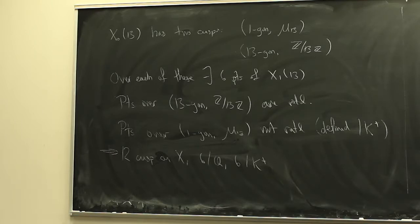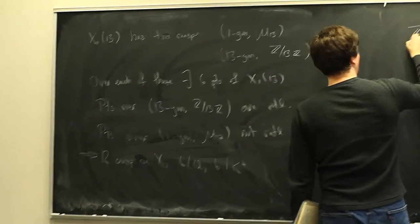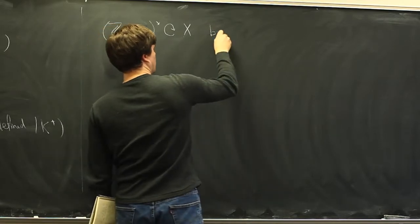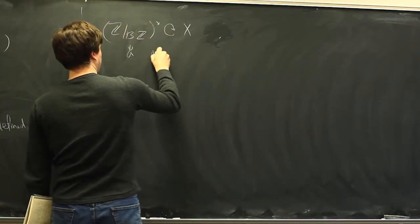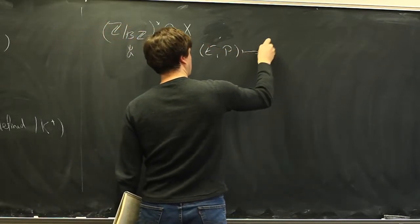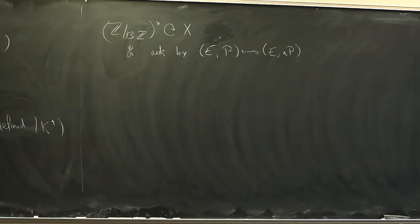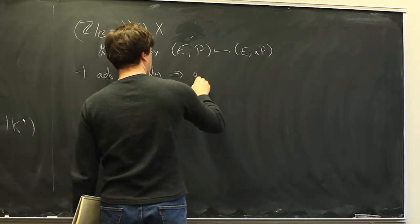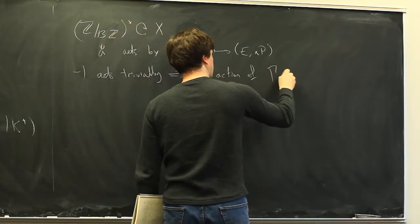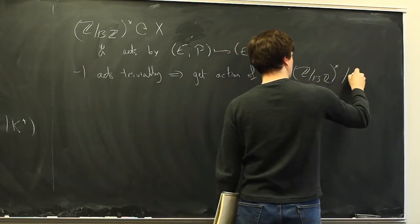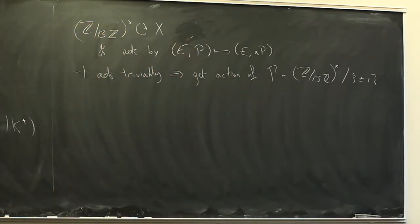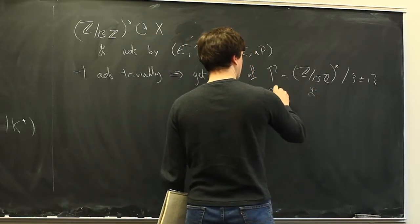The next basic fact is that X has an important group of automorphisms. The group (Z/13Z)* acts on X by scaling the point: an element a sends (E, P) to (E, aP). Minus one acts trivially for the same reason as before, so we get a faithful action of the quotient group Γ = (Z/13Z)*/{±1}. The action is faithful and you can see this by checking it acts faithfully on the six rational cusps.